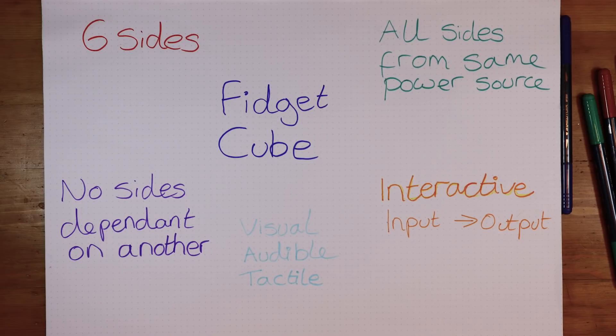My ideas for the cube are that it has to be a fidget cube so there needs to be six sides. All the sides are going to be powered from the same power source inside the cube. No side must be dependent on another side, however one of the sides will contain all the connectors for distributing the power.